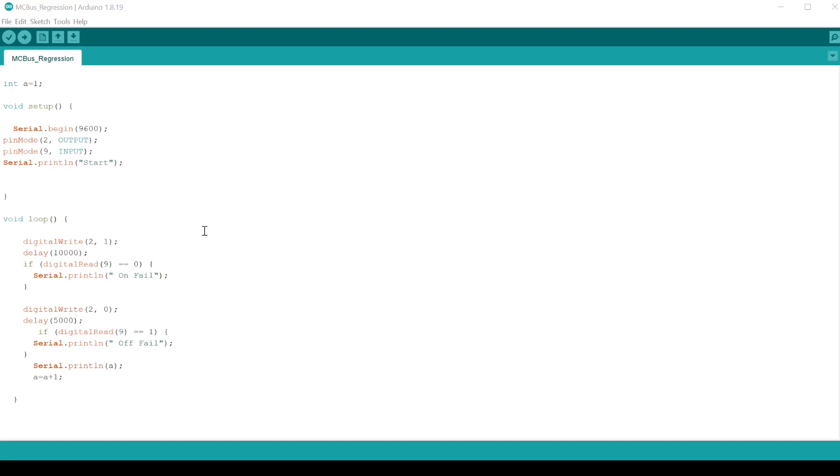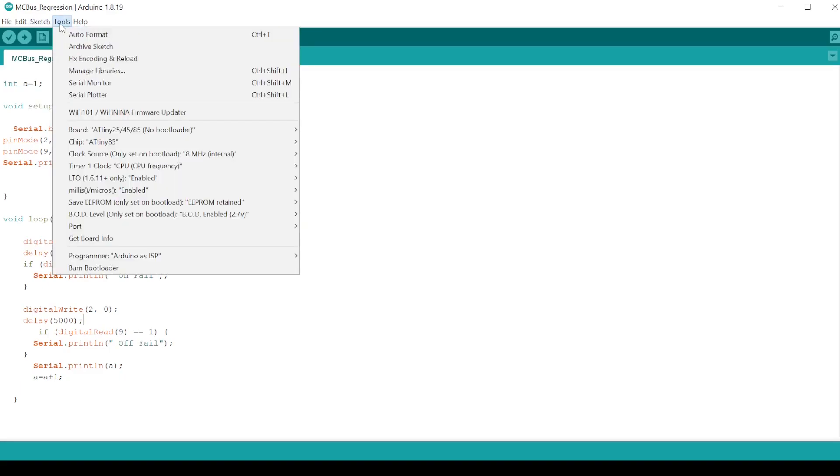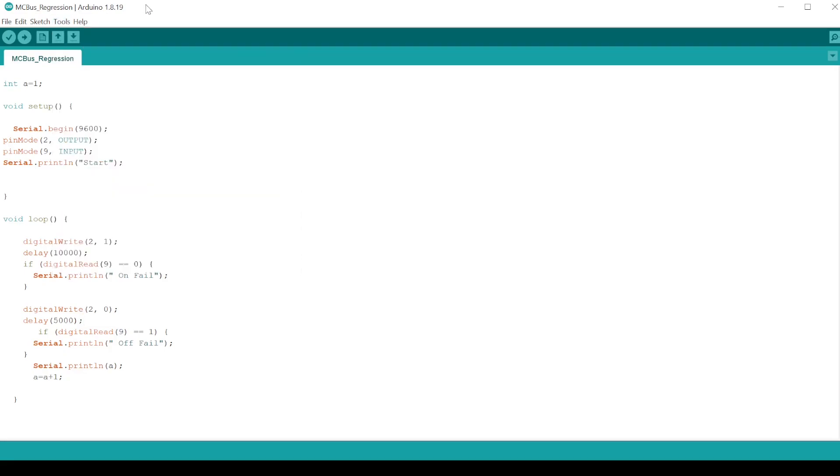Here's our code. We're using the serial bus to transfer the information from the Arduino to the PC. We'll use the serial monitor to actually look at the values that we're counting through. So we're going to use that serial bus.